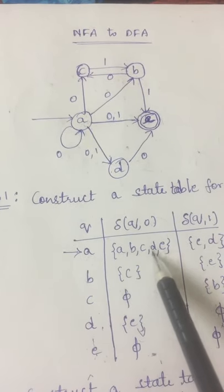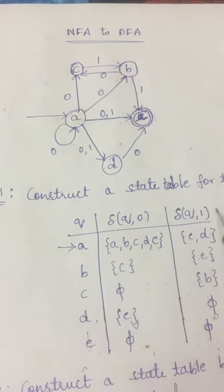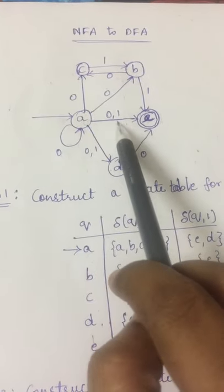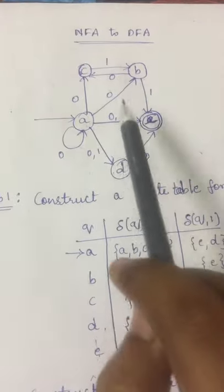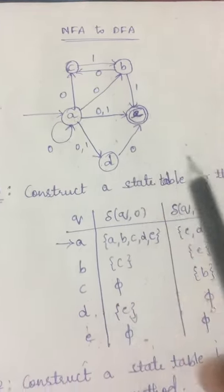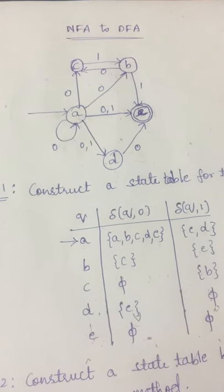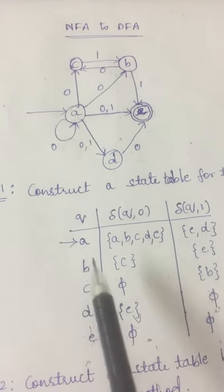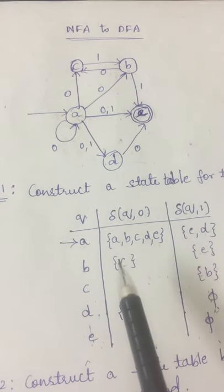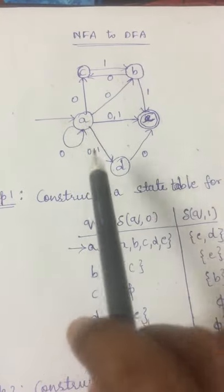So all the states of A by reading input symbol 0 are A, B, C, D, E, and these have to be mentioned in the state table. Similarly, for the state A by reading the input symbol 1, it is moving to states E and D. This E and D has to be mentioned in the table. In the similar manner, we have to fill all the transition states for the given states in the diagram.